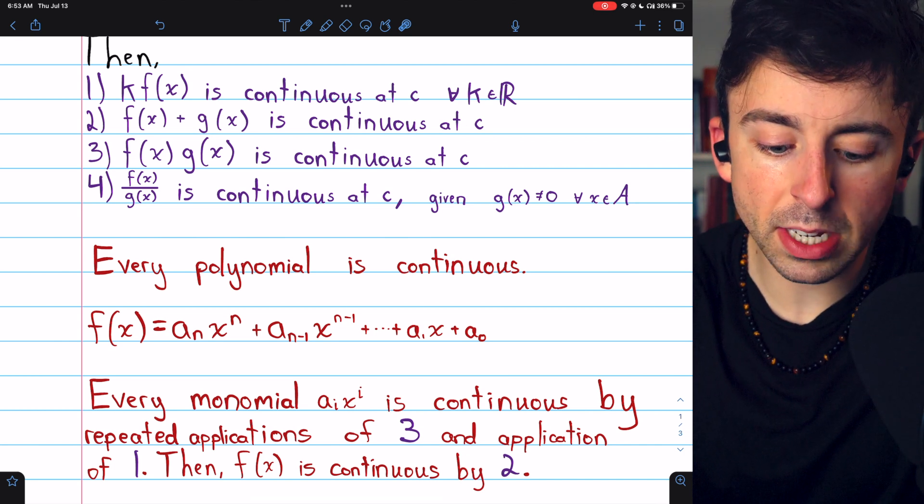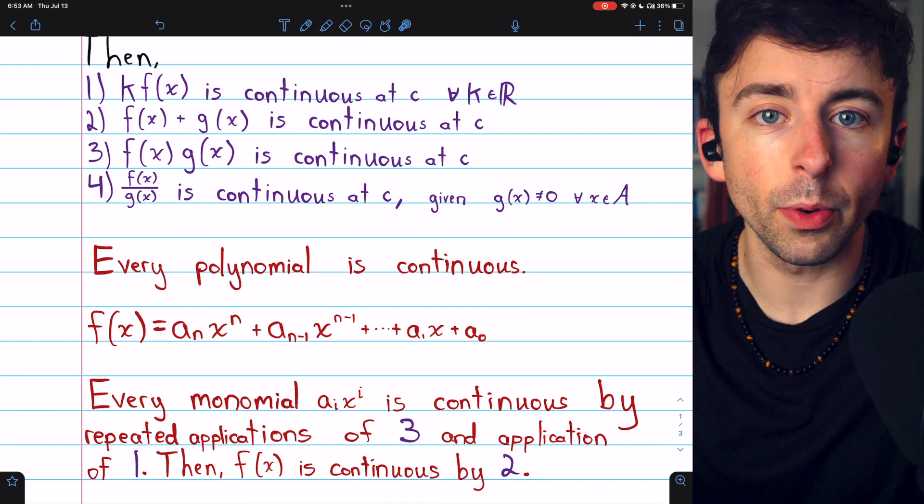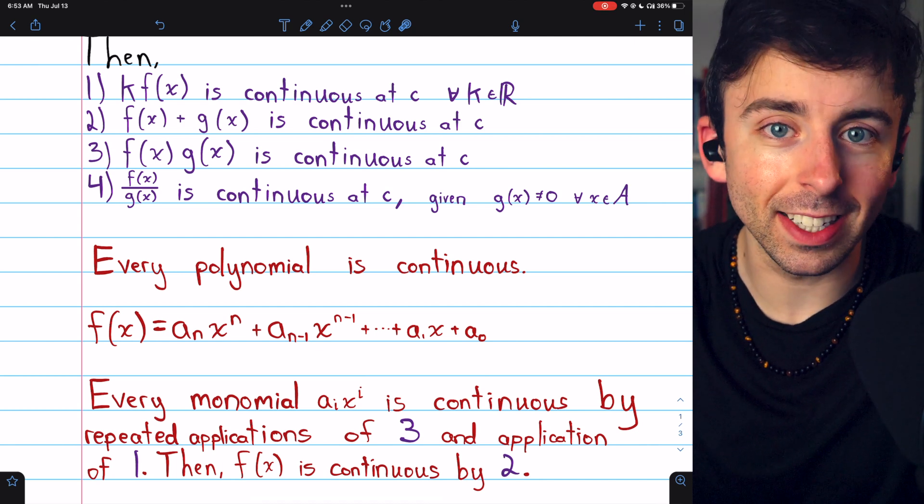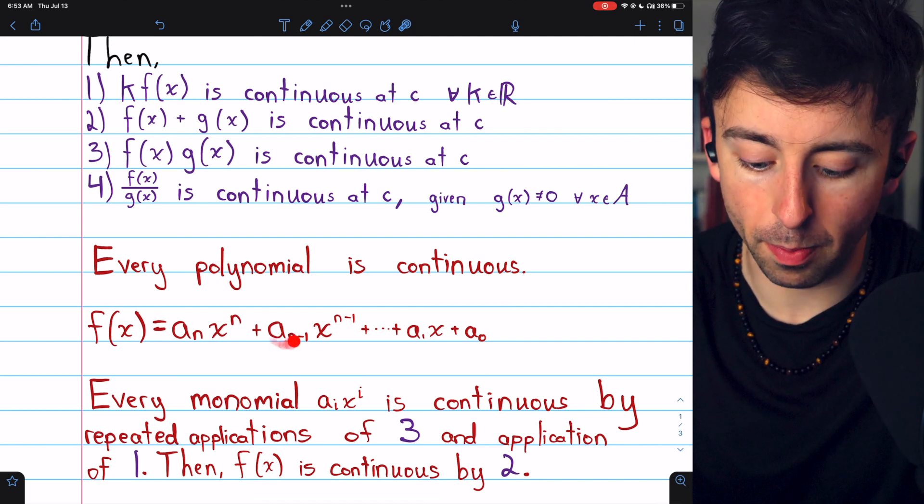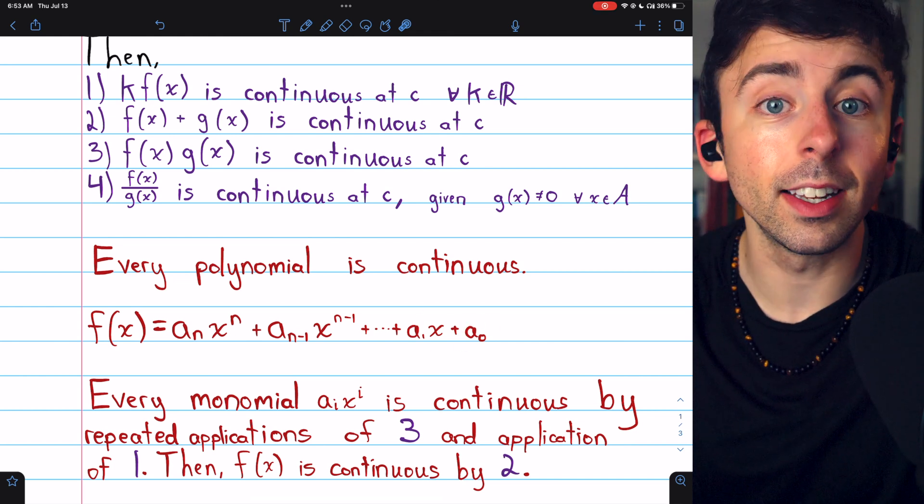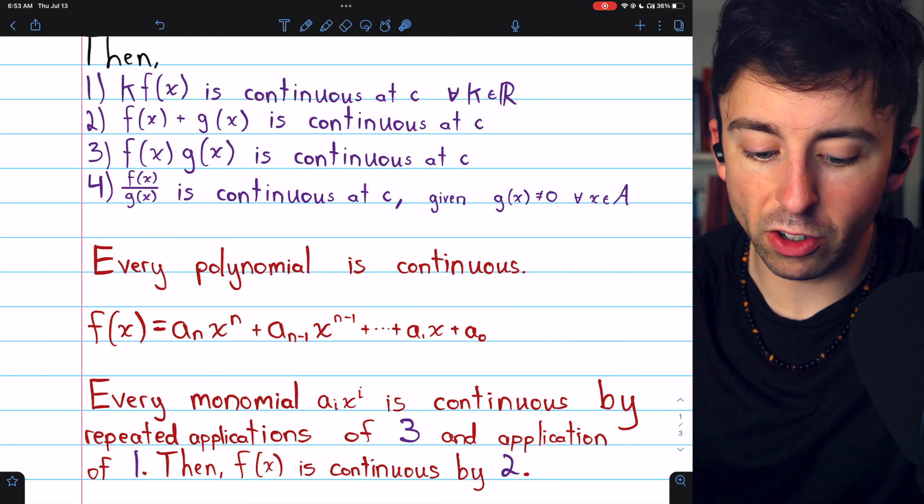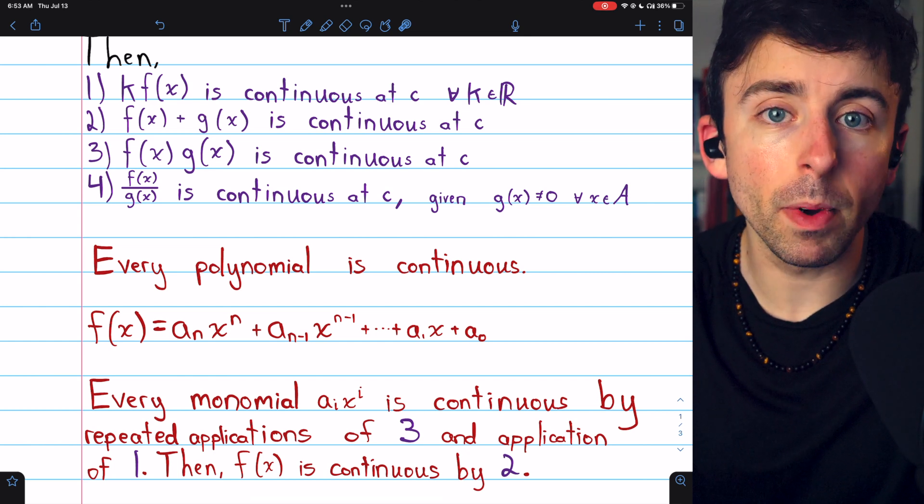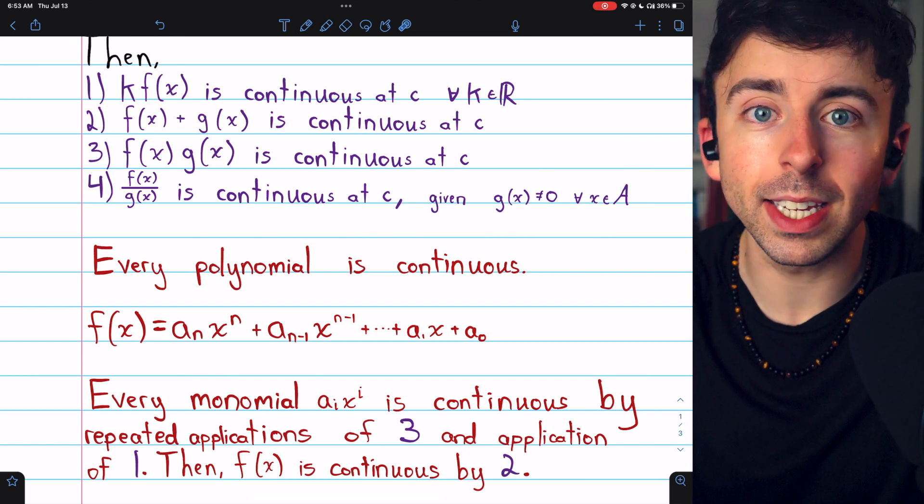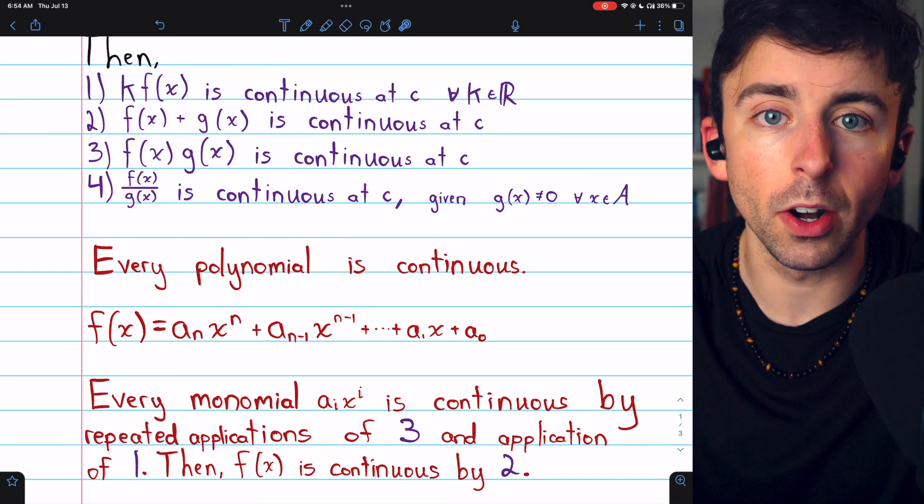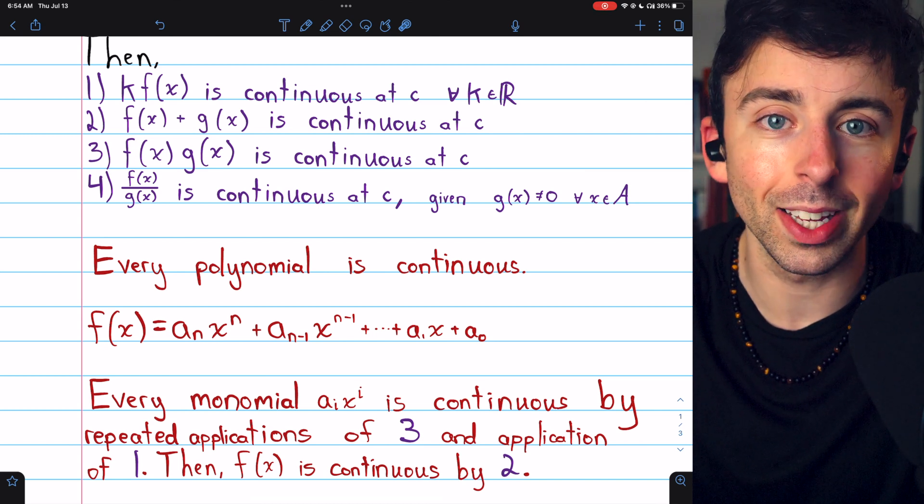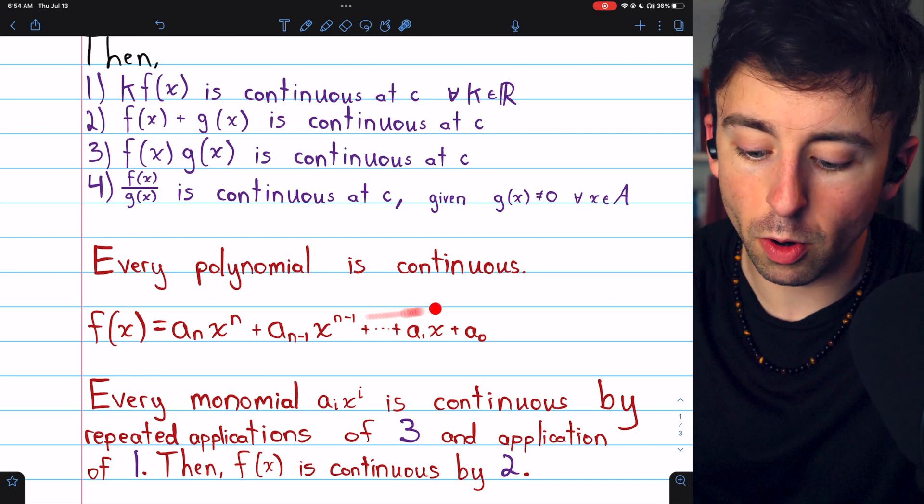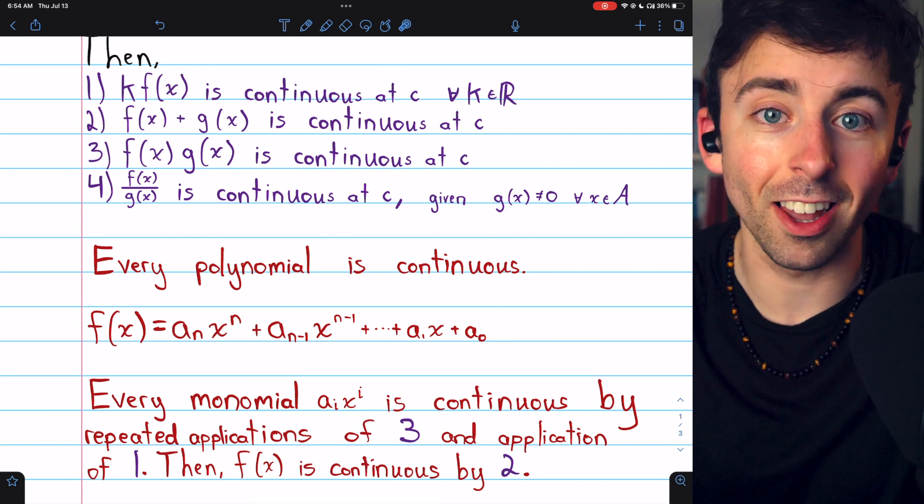So laws three and one, along with the fact that the identity function is continuous, combine to guarantee that any monomial from this polynomial is continuous. But then, of course, we can just apply property two to guarantee that any sum of these monomials must also be continuous, since the individual monomials themselves are continuous. That's how we know that every polynomial is continuous using these laws.